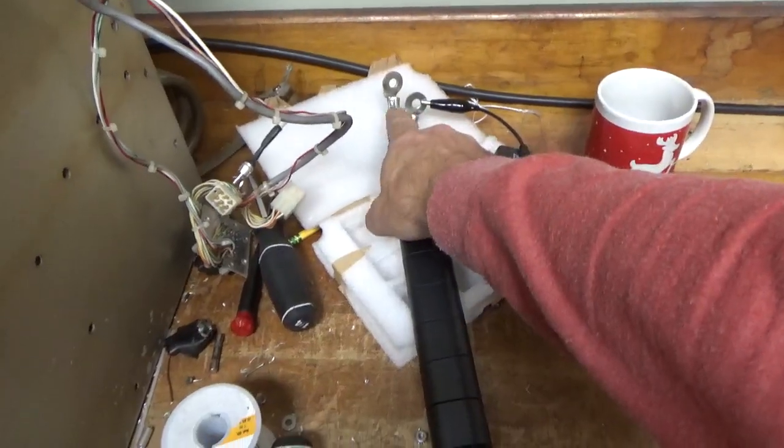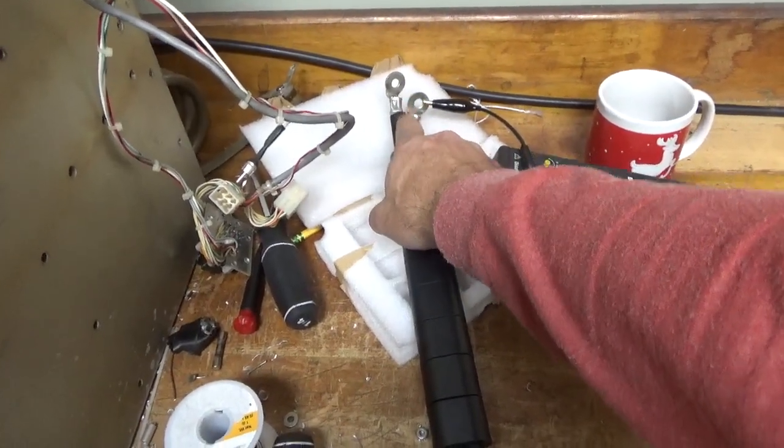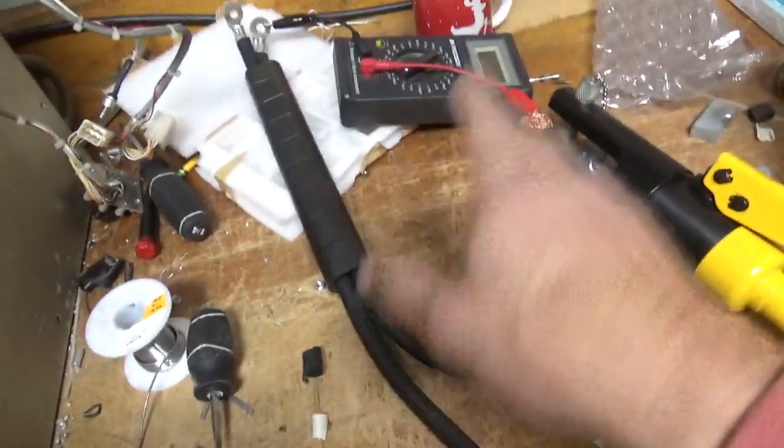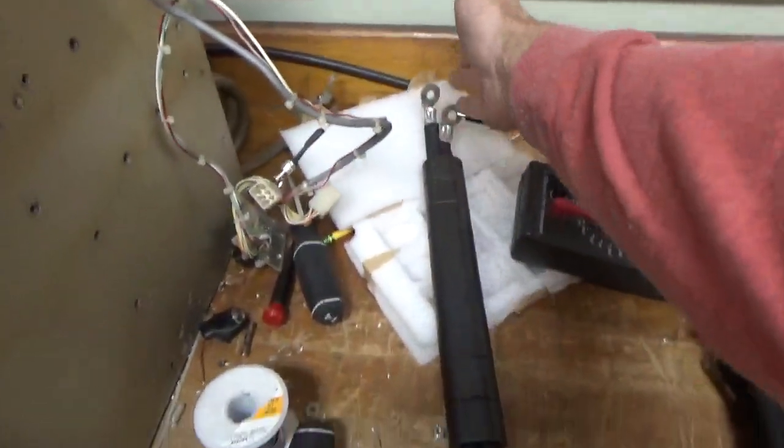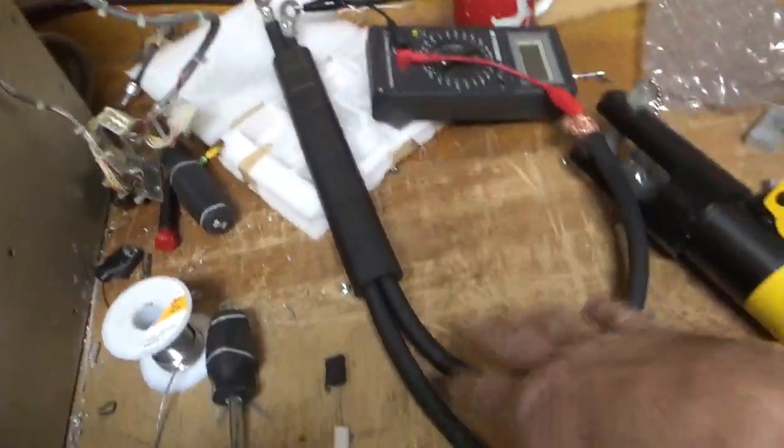So I crimped the terminals on the end, soldered them. I need to put heat shrink on, put heat shrink on the ends, just like the other one. I'll cut this to length.